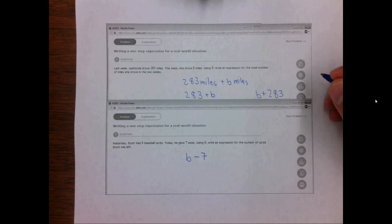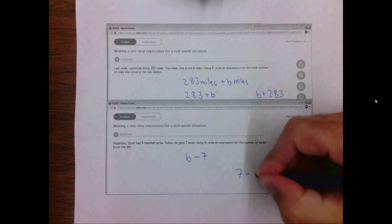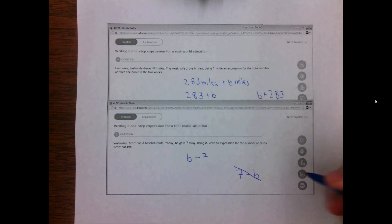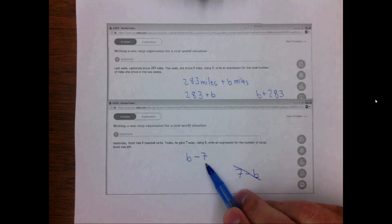Note that in this case it would be incorrect to write seven minus B because he didn't start with seven baseball cards and give B away. He started with B and gave away seven.